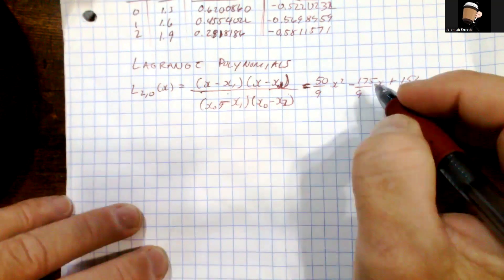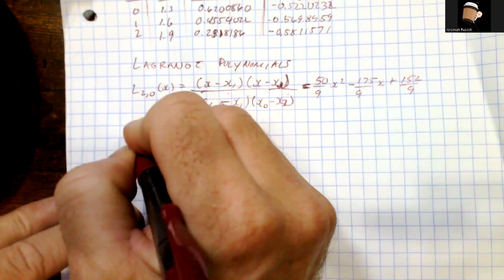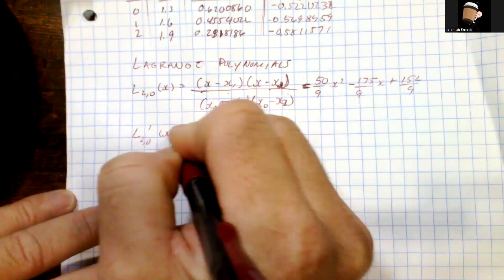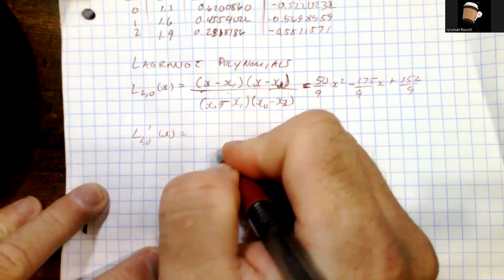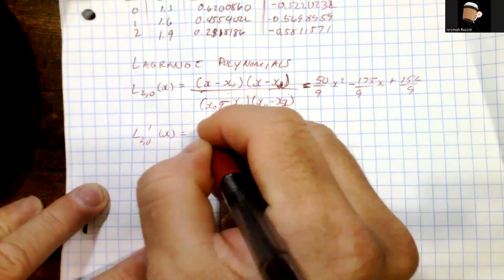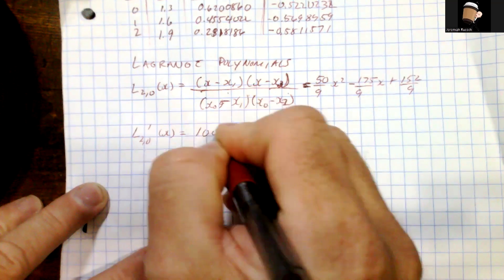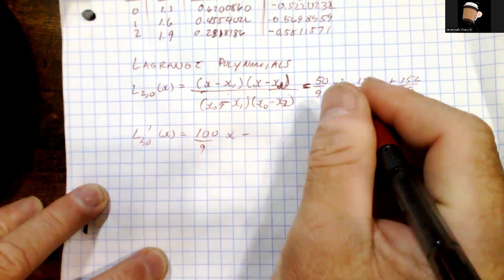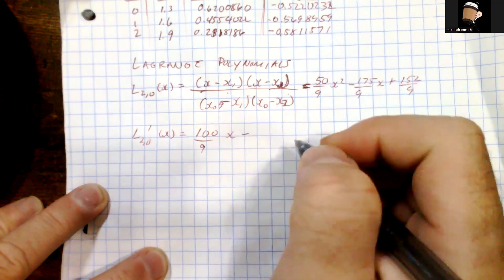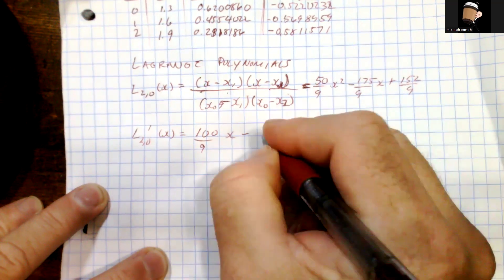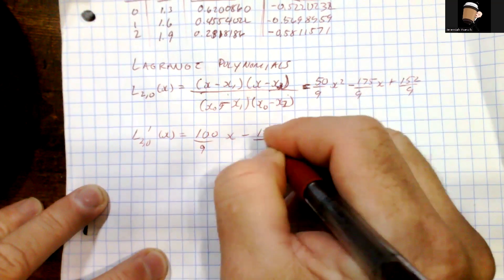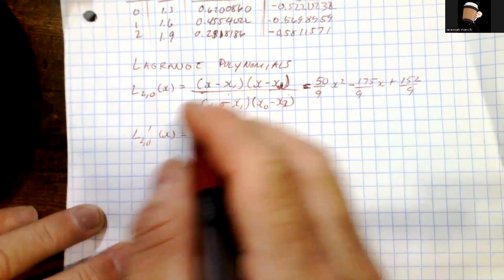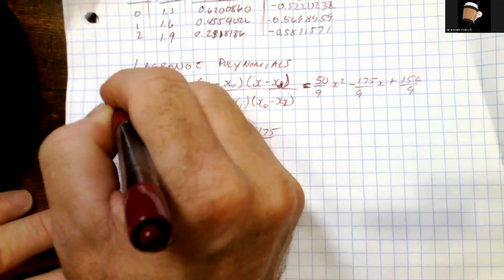Since we're here, let's go ahead and compute L₂₀′(x). Taking the derivative, you're going to get 100/9 x minus 175/9.